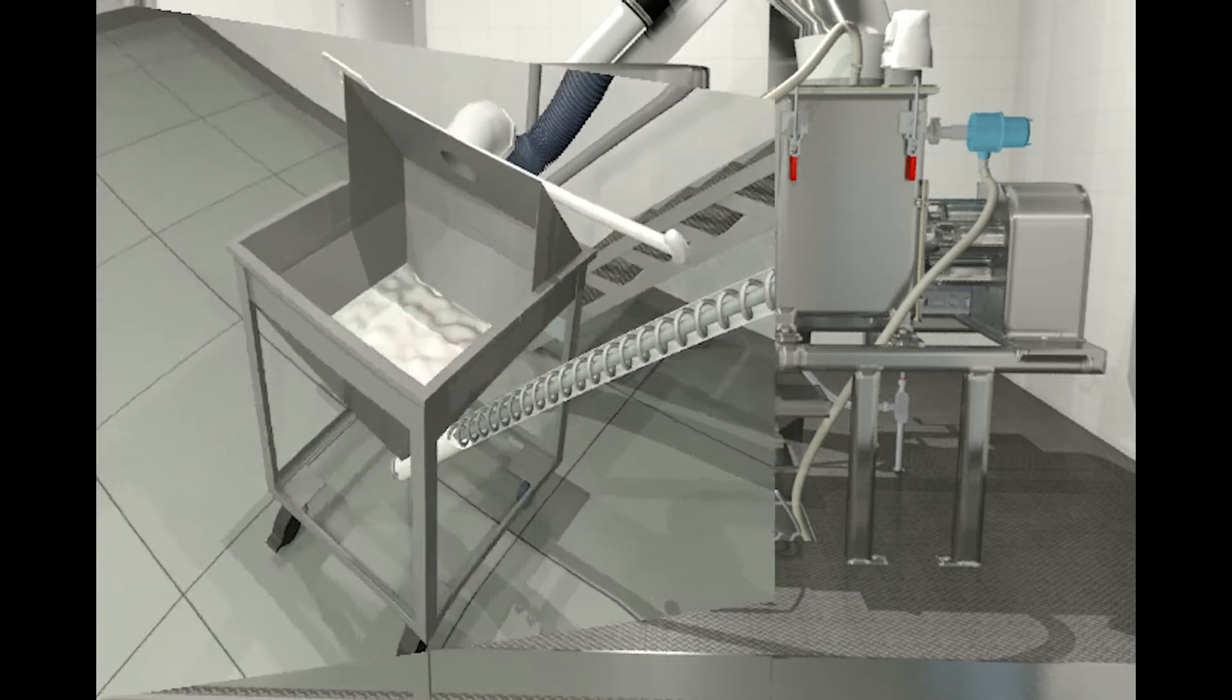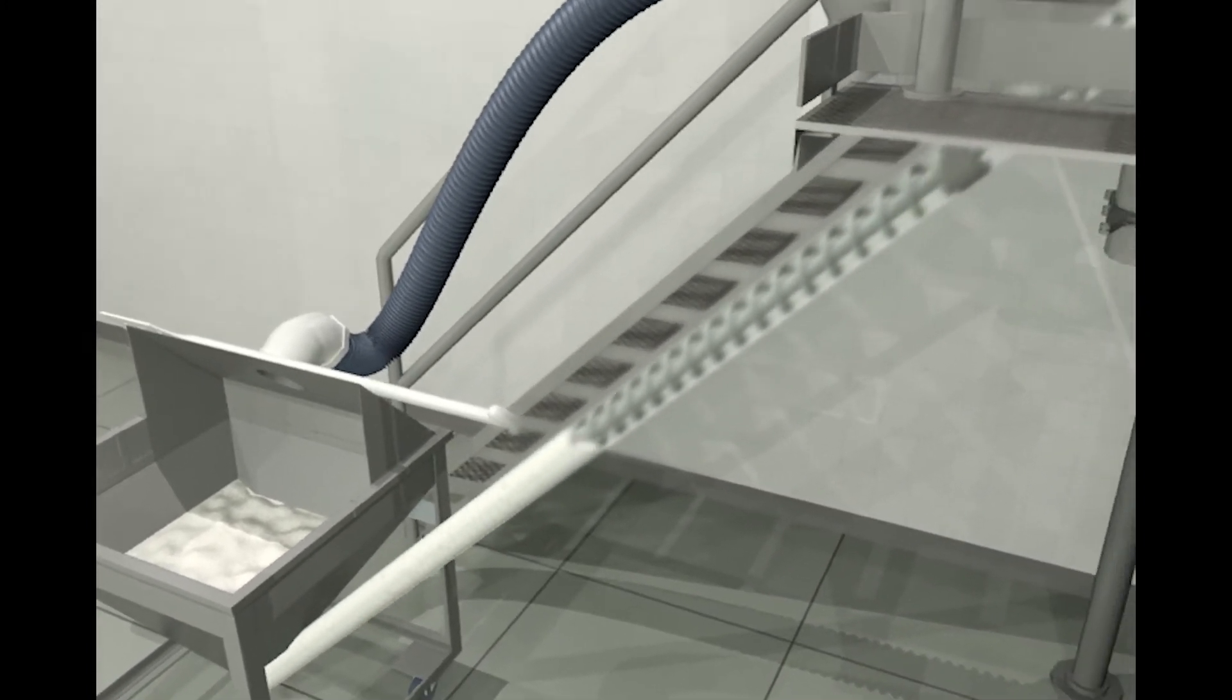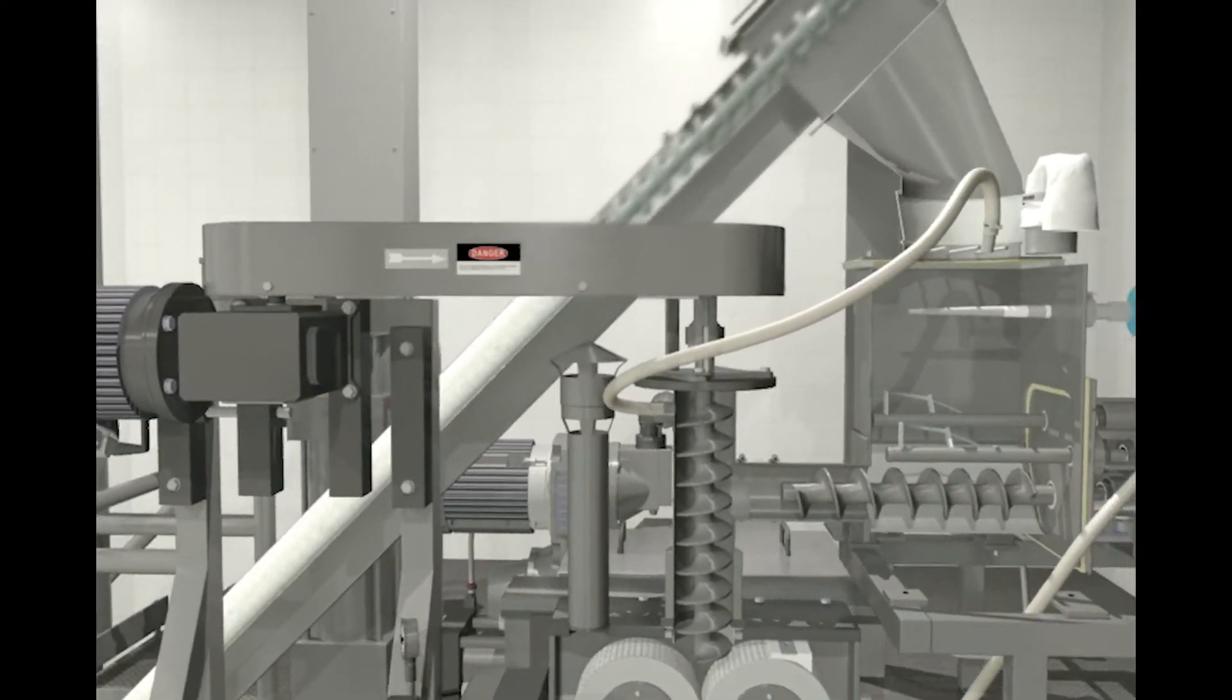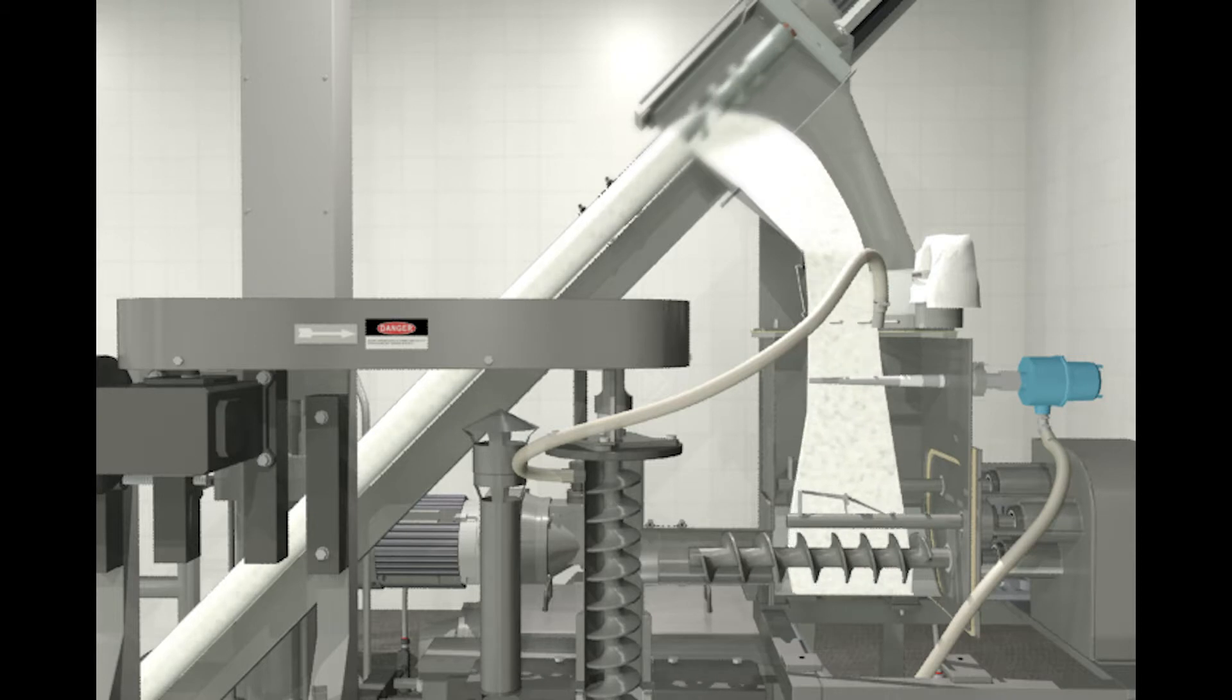Feed material is delivered to the upper feed hopper of the compactor from the floor hopper via a flex screw conveyor. A material level sensing system maintains acceptable amounts of material in the upper hopper at all times.